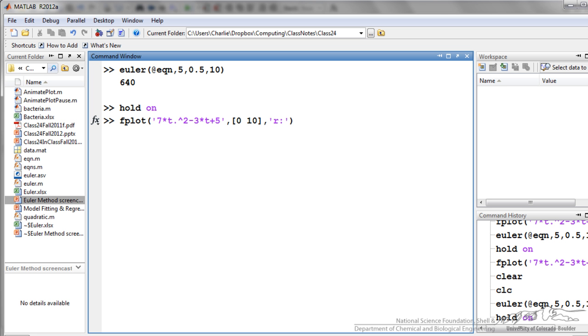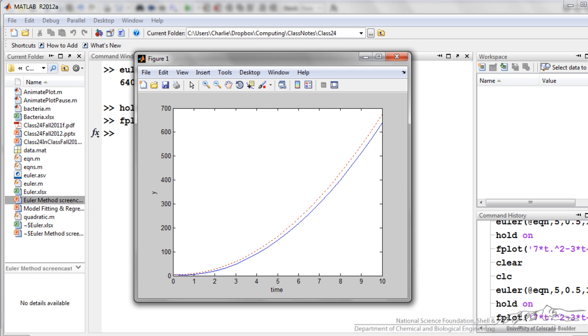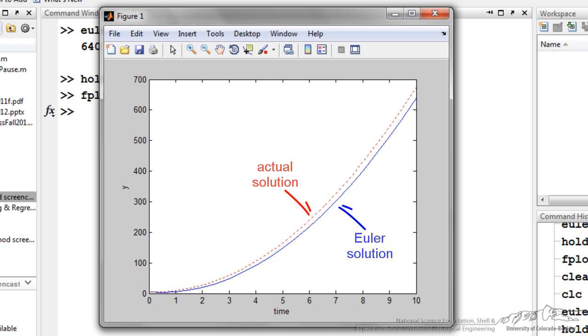Along with that Euler plot, I am going to plot the actual solution from 0 to 10, and you will notice that the actual, which is in red here, is quite a bit higher than the blue one.